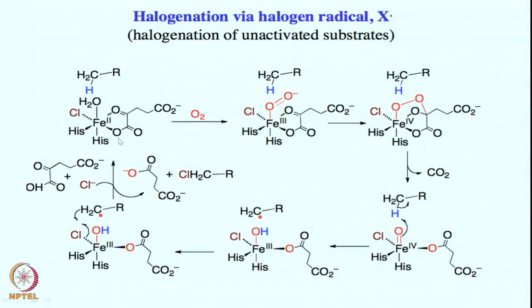We will discuss very briefly selective halogenation of aliphatic C-H bonds. These halogenations are quite prominent and available in nature — this is a fascinating enzyme mechanism. These are called beta-ketoglutarate dependent halogenases; beta-ketoglutaric acid is used as the mediator for this chemistry. In the active site of the alpha-ketoglutarate dependent halogenase enzyme we have 2 histidine residues and 1 halide.